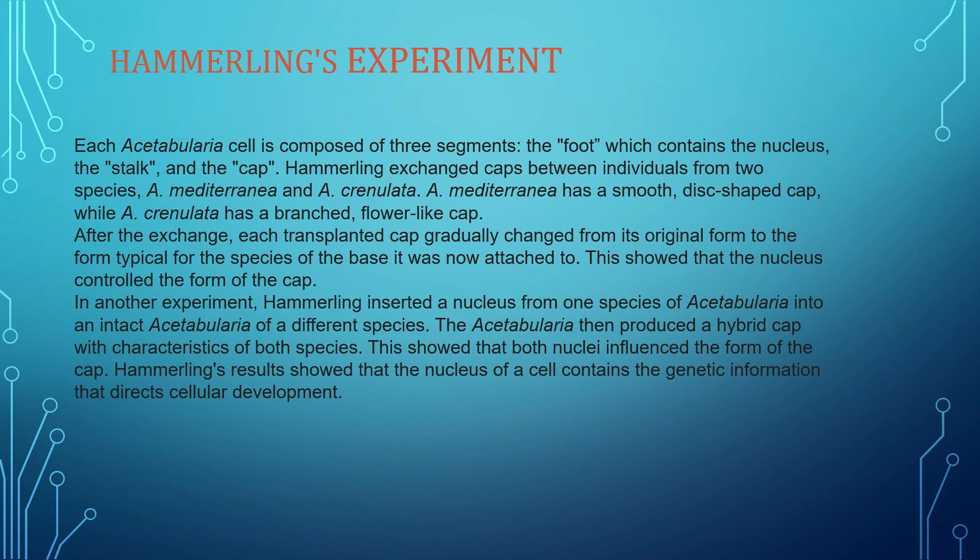Hammerling's experiment was performed on Acetabularia. As we know, it has three main segments: rhizoids, stalk, and cap. Hammerling exchanged caps between two species — Acetabularia mediterranea and Acetabularia crenulata. Acetabularia mediterranea has a smooth, disc-shaped cap, whereas crenulata has a branched, flower-like cap. After the exchange, each transplanted cap gradually changed from its original form to the typical form of the species whose base it was now attached to.